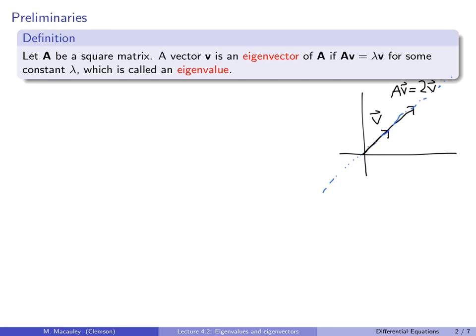So how do we find these eigenvectors? Let's go back to the algebra. We need to solve A times V equals Lambda times V, solving for V but also for Lambda — we need to figure out both. It's not clear which one to do first, so let's play around with this and see what happens.